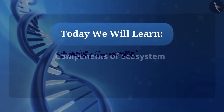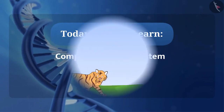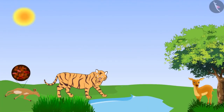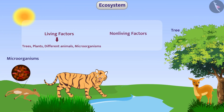Today we are going to learn about components of ecosystem. Let us first understand what is an ecosystem. There are different organisms around us like trees, plants, different animals, microorganisms, and non-living factors such as soil, wind, rain, heat, minerals etc. This creates our environment.